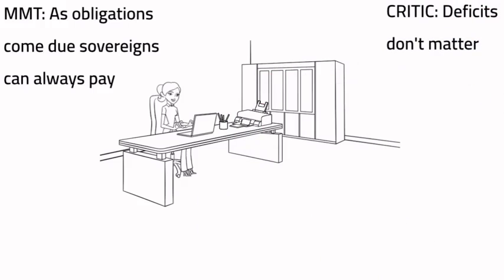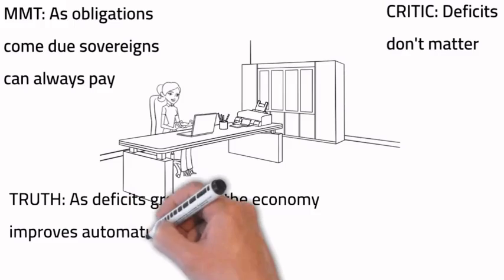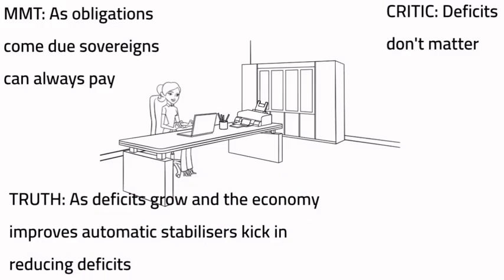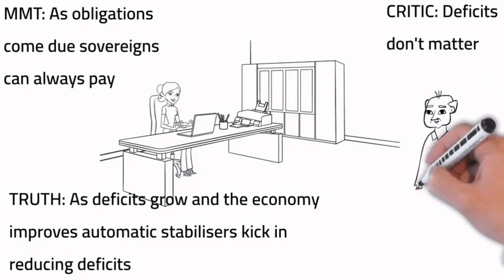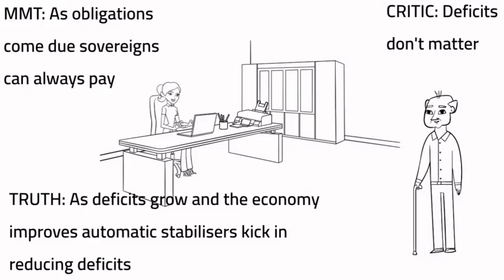Critics say MMT says deficits don't matter. The truth is, as deficits grow and the economy improves, automatic stabilizers kick in, reducing deficits. Allocating resources to poverty, homelessness, and aged care is what matters.